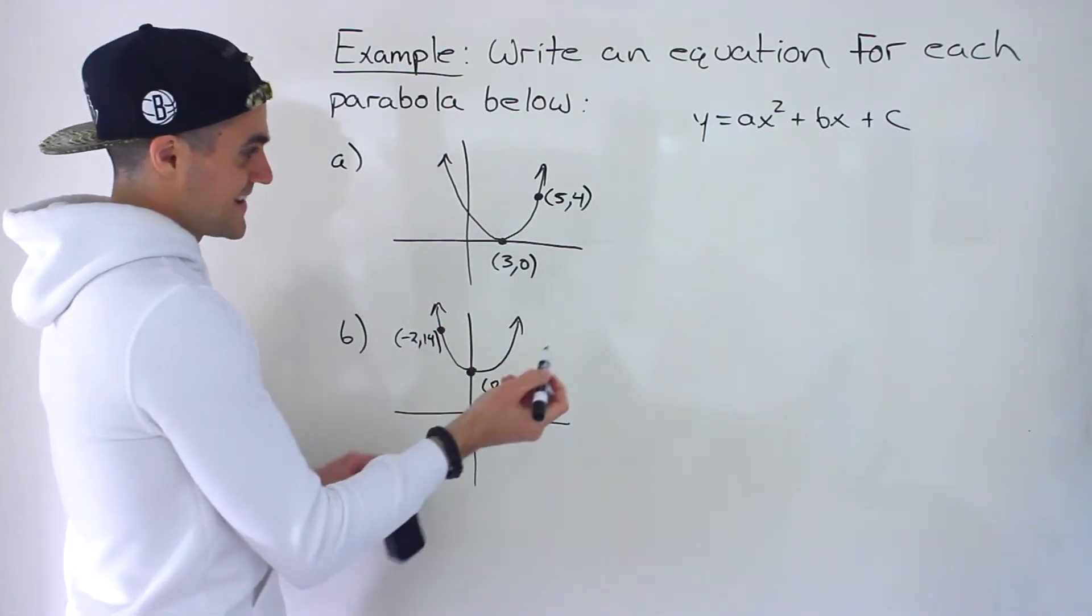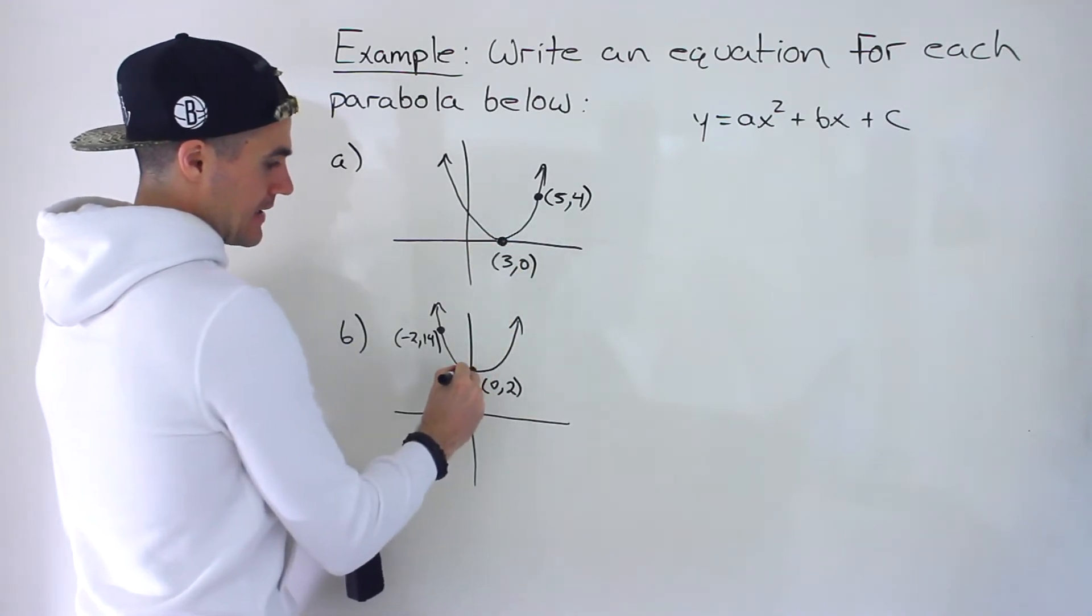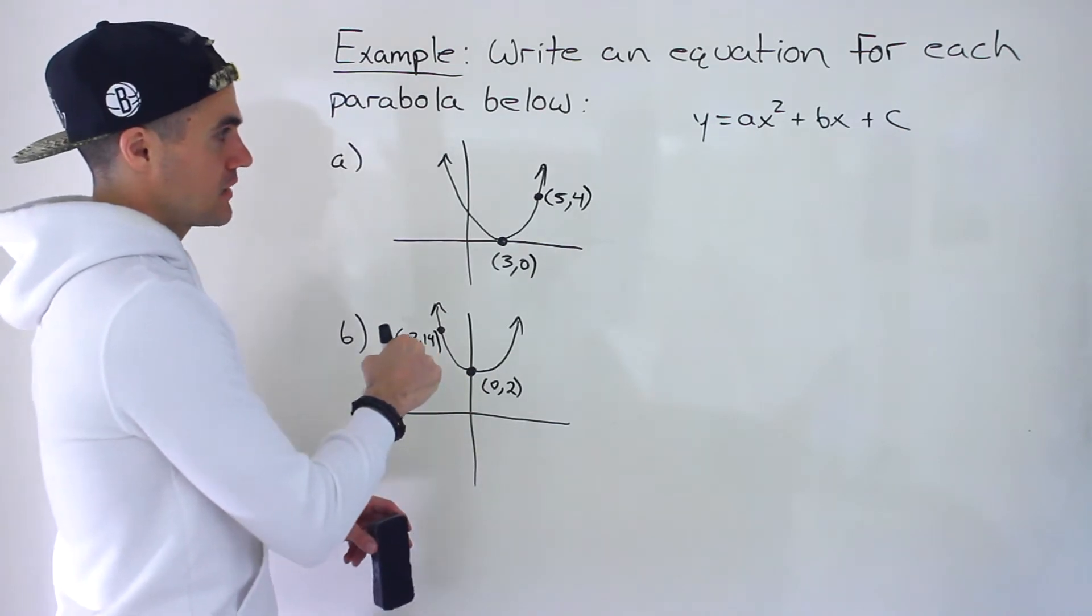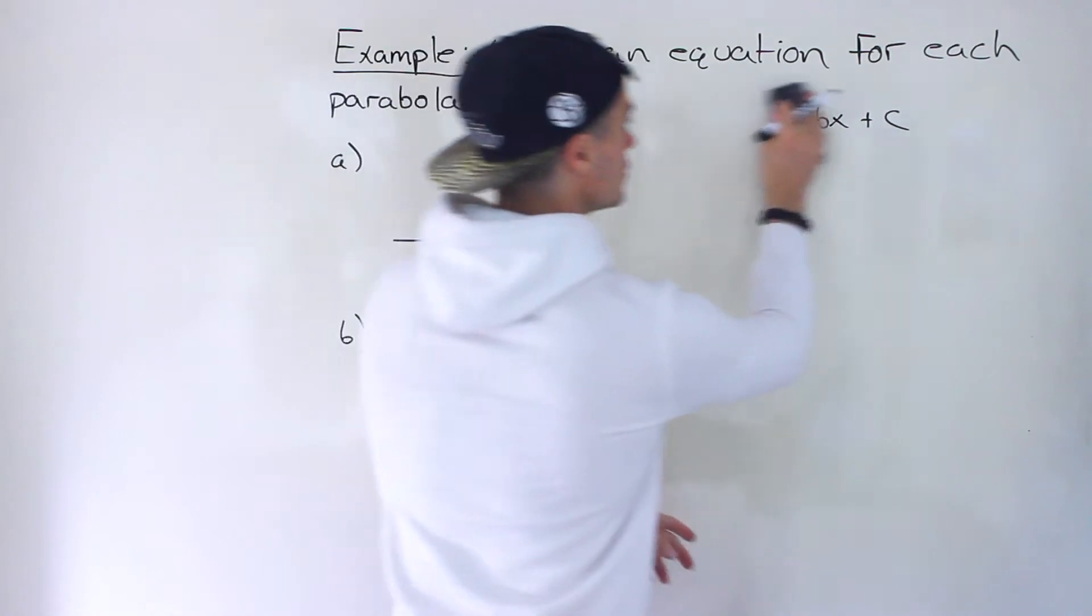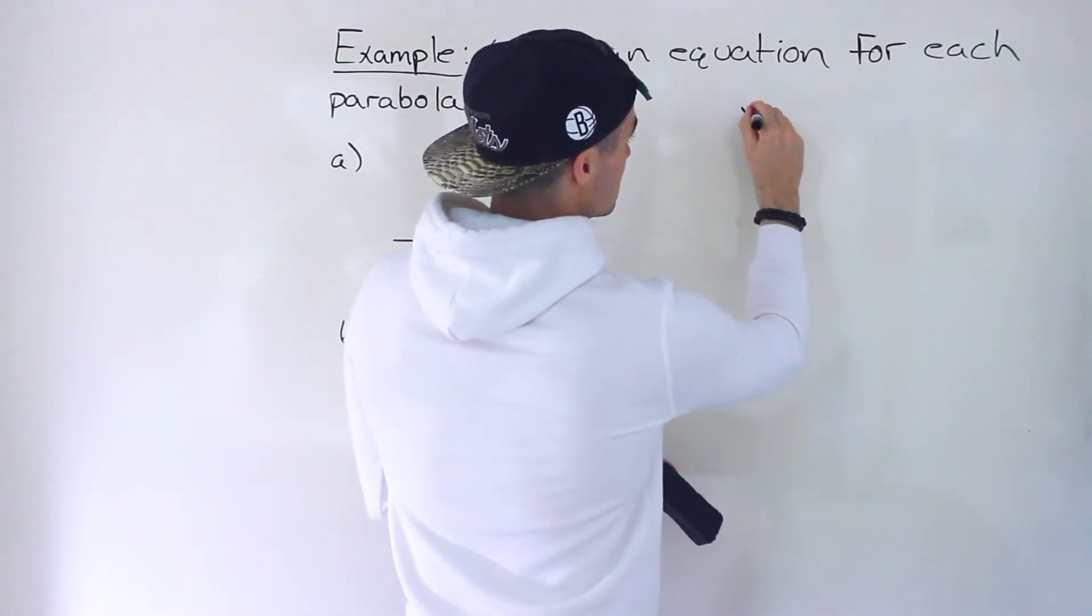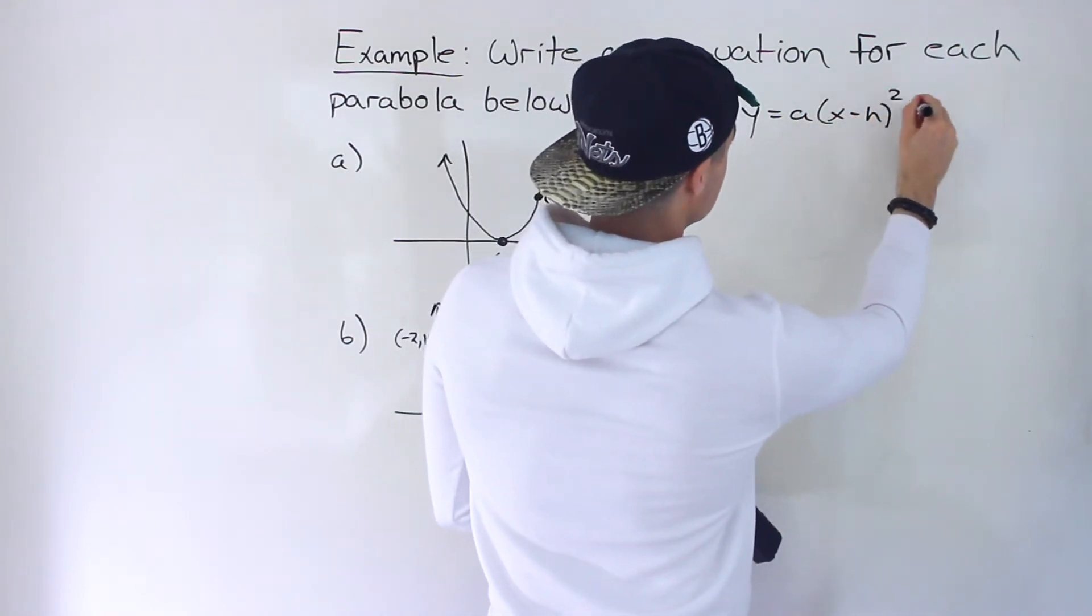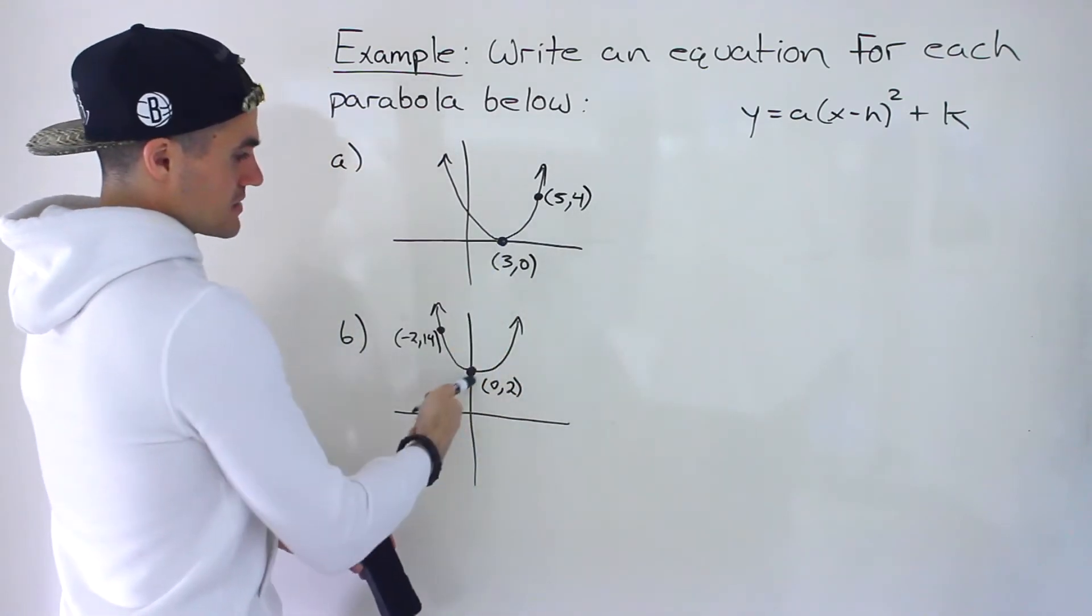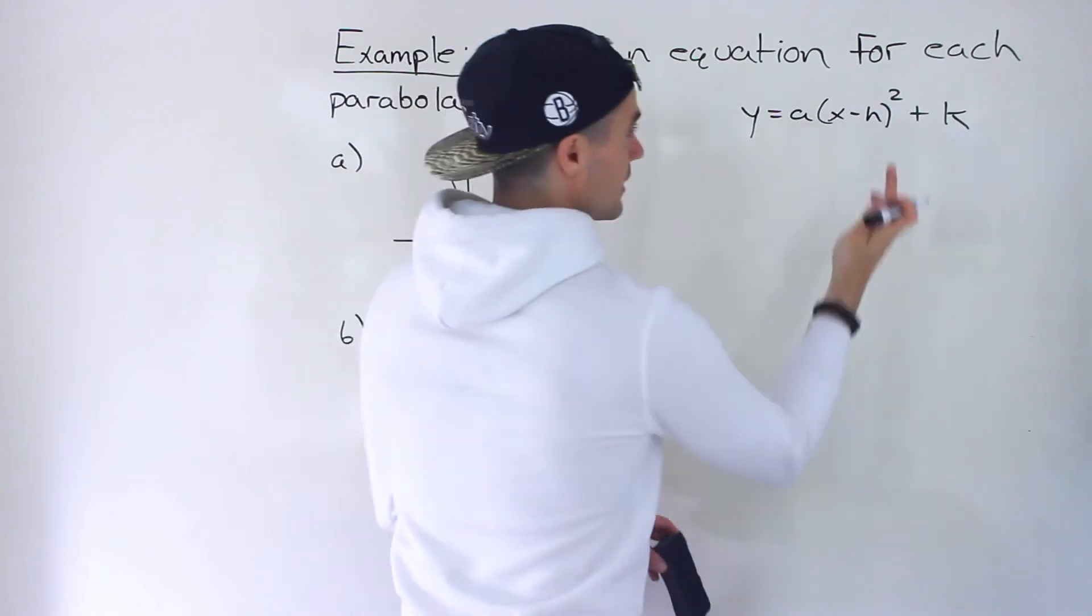Well, notice what's nice is that one of the points is a vertex in each of these. And so instead of putting it in this format, what we can do is we can put it in the vertex form, which we know is this. And because we have the vertex of each of these, then we automatically have the H and K value.